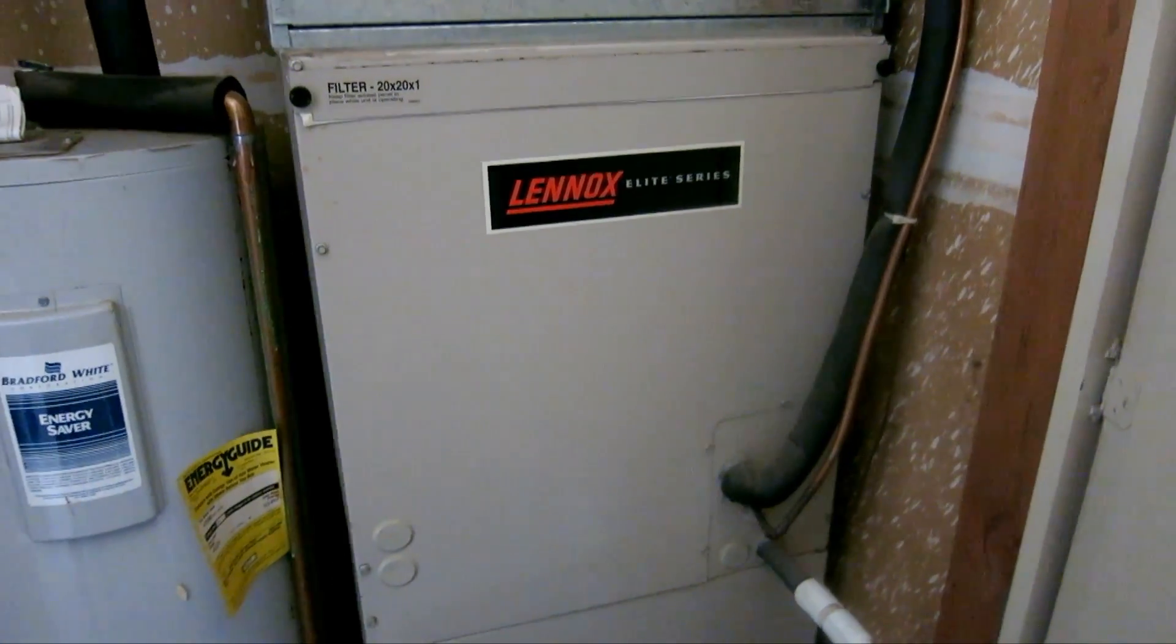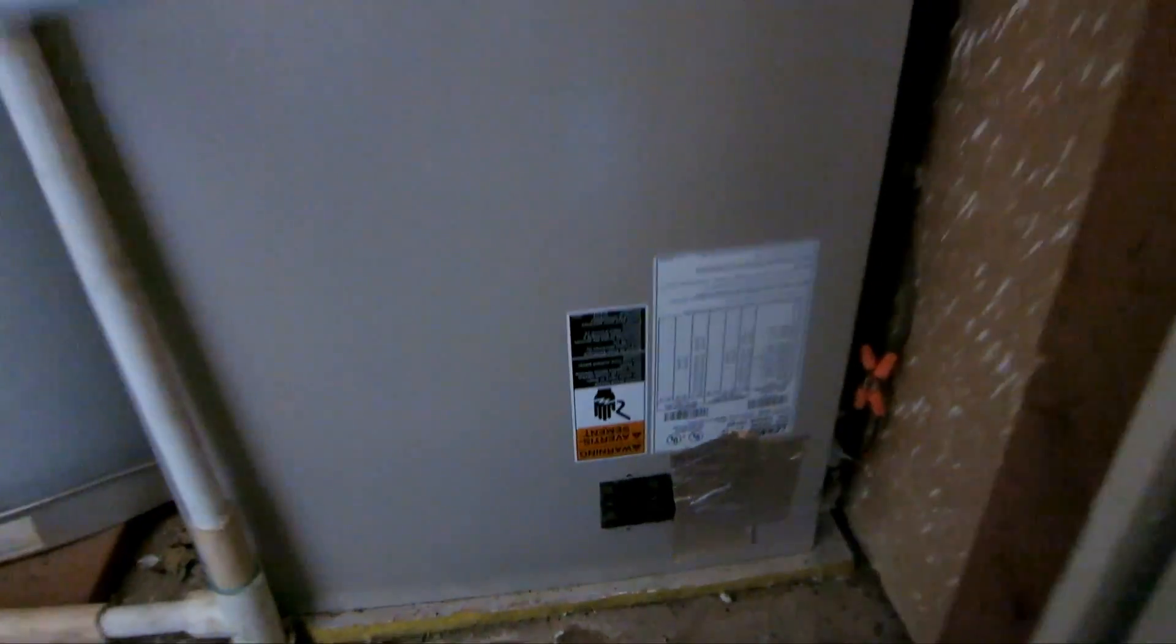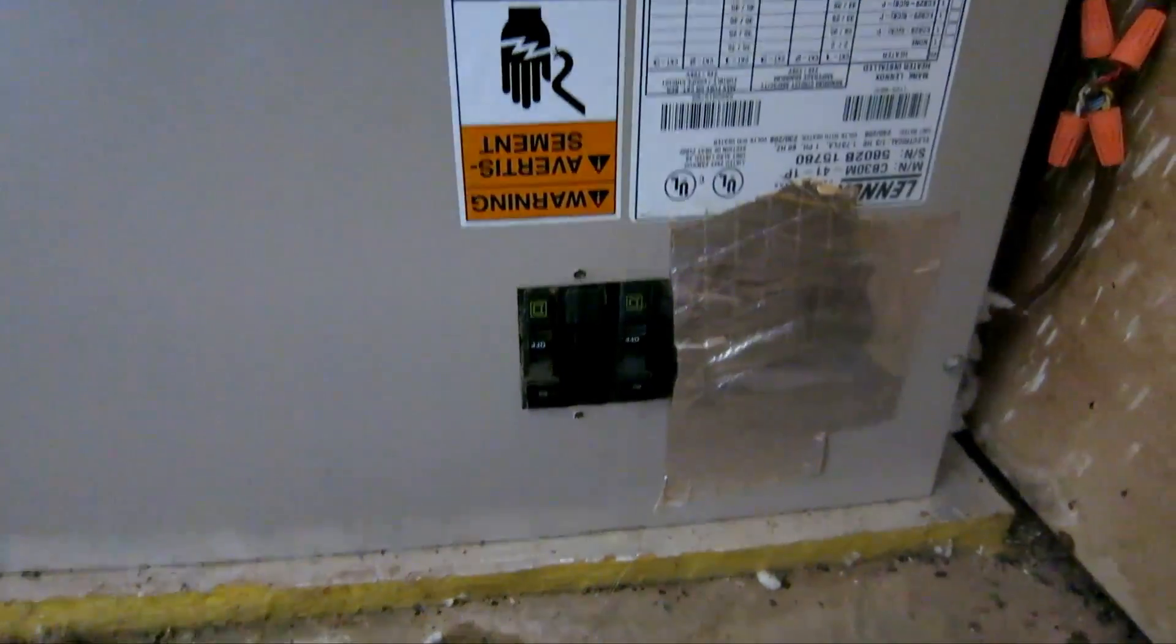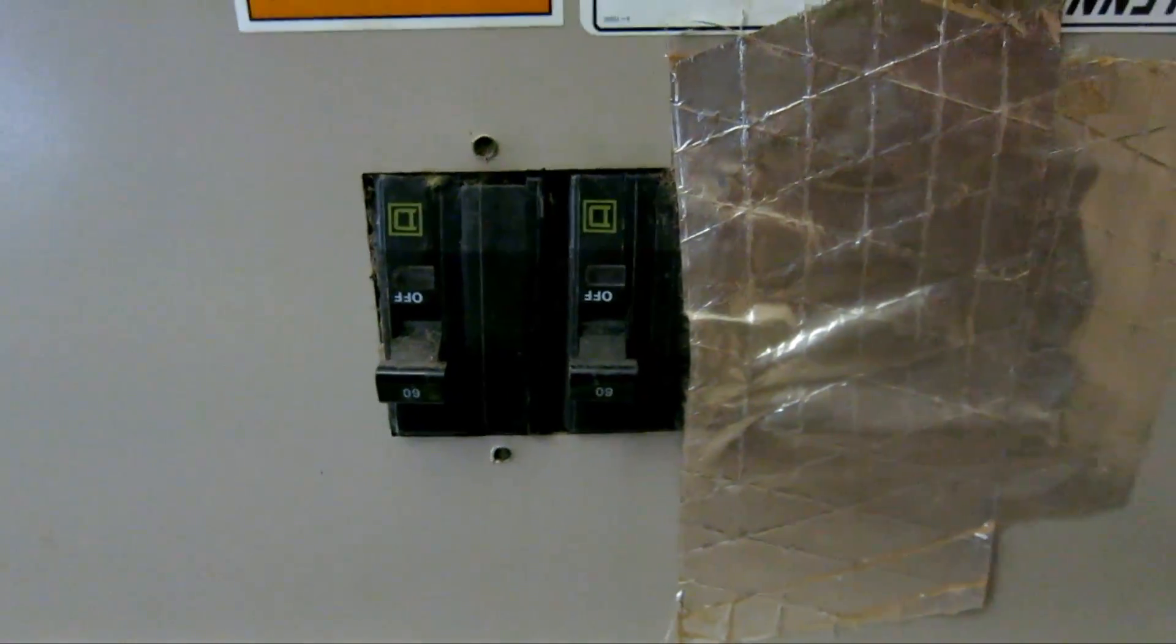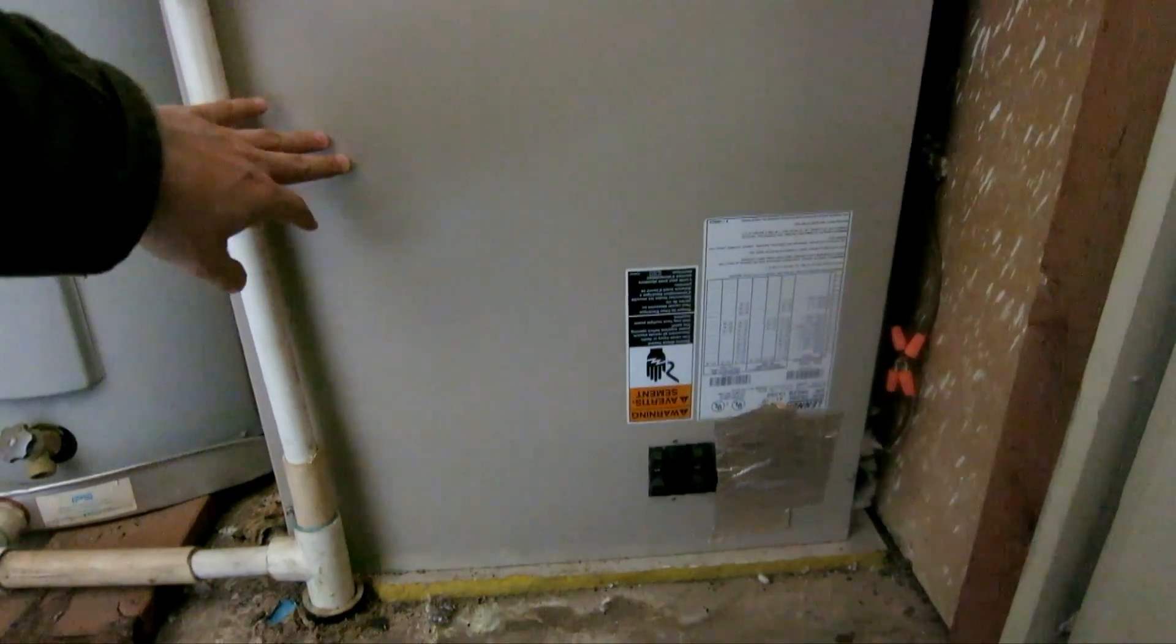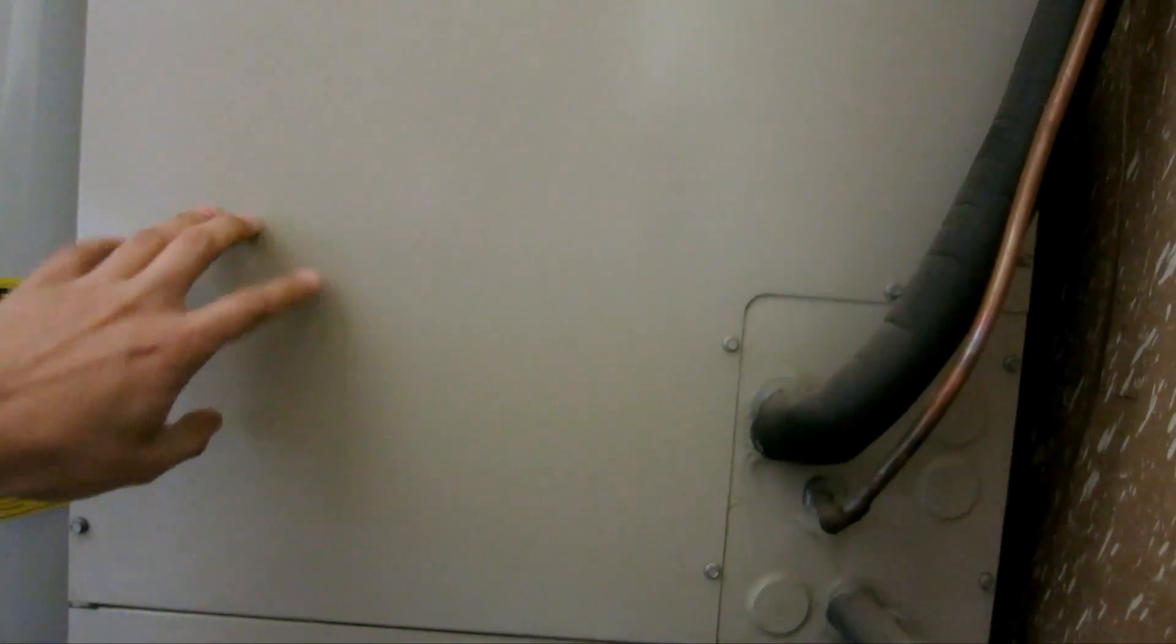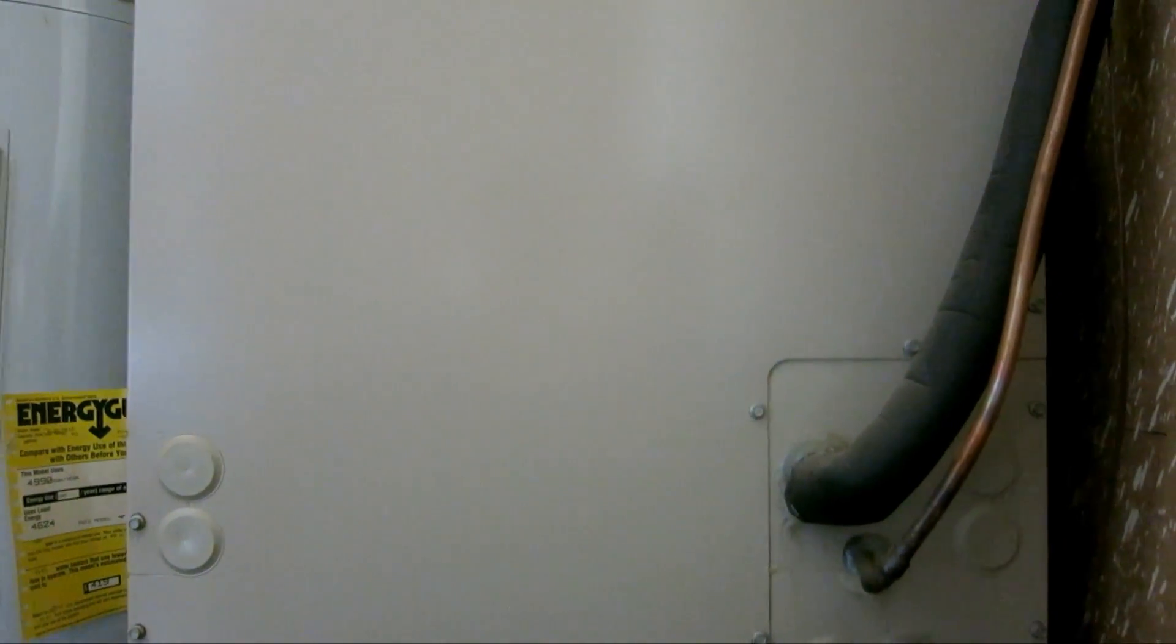This unit right here is an electric unit, not a gas furnace. The way you can tell is at the very bottom there's a main switch to turn off the furnace. The bottom part is the furnace, the top part is where the evaporator coil for the AC is at.